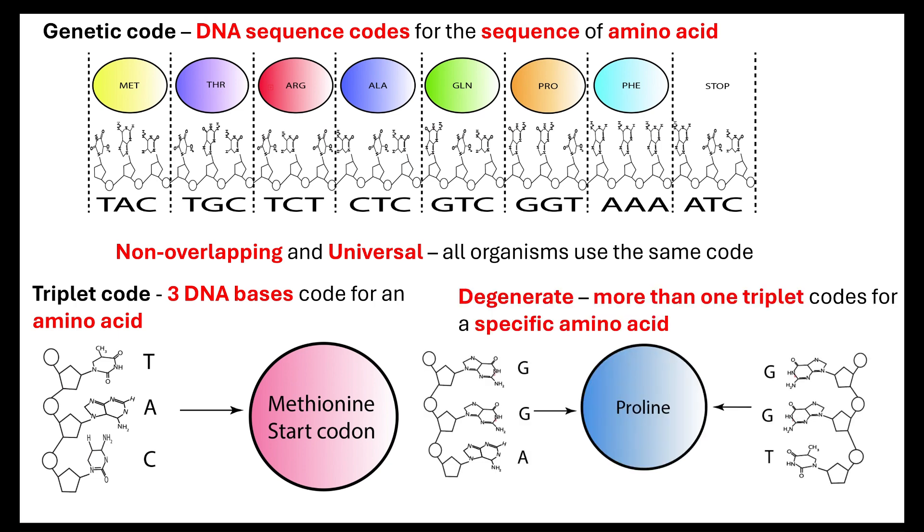Also, we've got the fact that it's degenerate. Now, that means that more than one triplet codes for a specific amino acid. So, in this case, we have guanine, guanine, adenine, which codes for proline, but guanine, guanine, thymine would also code for proline.